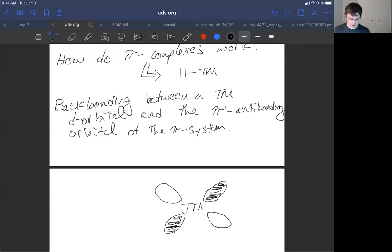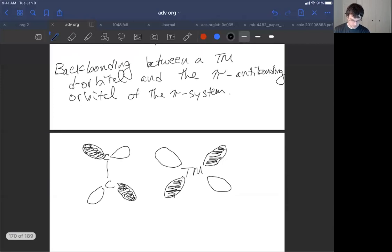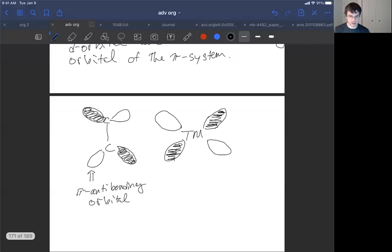Now what we do is we consider our CC double bonded series, but we're going to look at its antibonding orbitals. Okay, so this is the pi antibonding orbital of an alkene. So pi antibonding orbital. And where did I get that pi antibonding orbital?